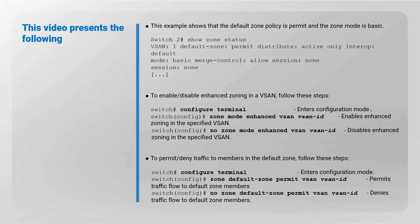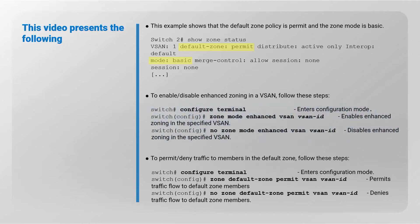This video presents the following example: the default zone policy is permit and the zone mode is basic. Steps are provided to enable or disable enhanced zoning in a VSAN, and to permit or deny traffic to members in the default zone.